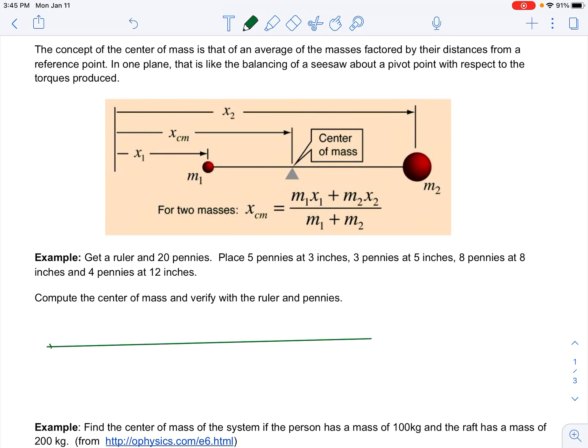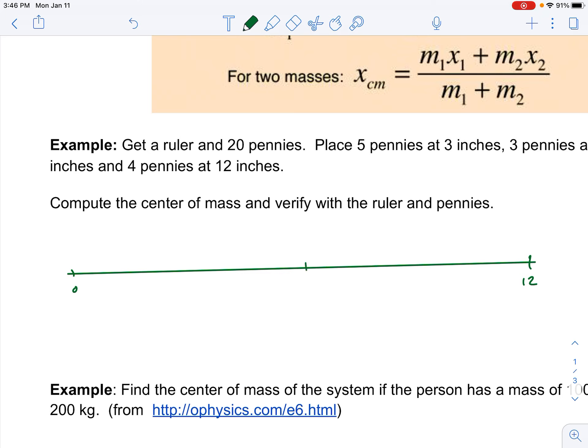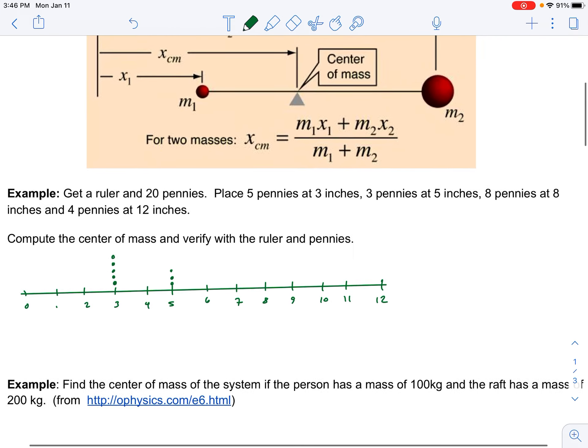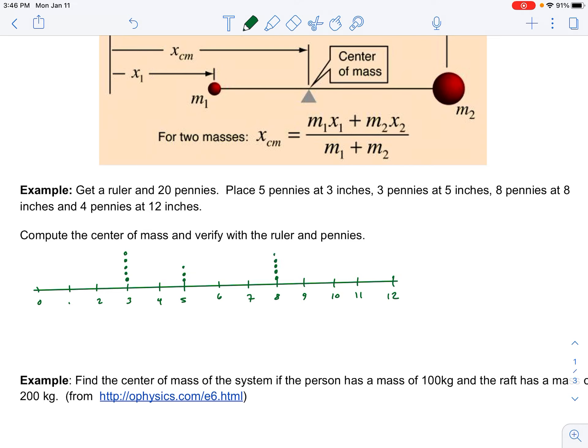So let's suppose that I had a ruler, and I'm going to go with an English ruler that's 12 inches long. So here are the markings on my imaginary ruler. And in this example, it says get a ruler and 20 pennies. Place 5 pennies at 3 inches, 3 pennies at 5 inches, 8 pennies at 8 inches, and 4 pennies at 12 inches.